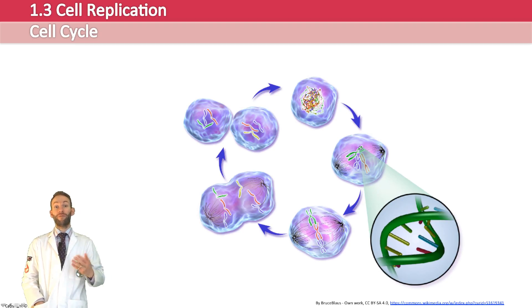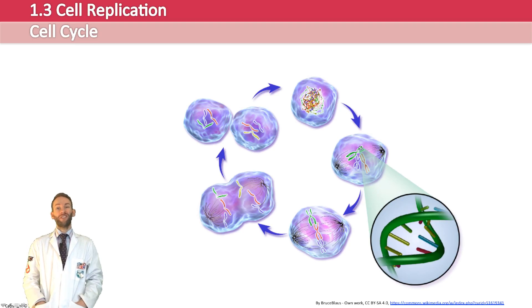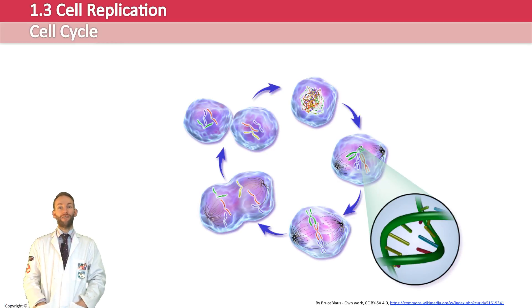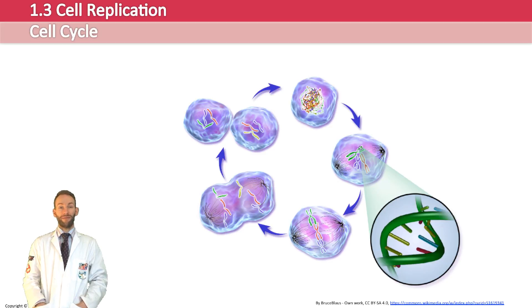When a cell divides, it goes through something called the cell cycle. The cell cycle is like the life cycle of a cell — it's a series of growth and development steps a cell undergoes to end up dividing and forming daughter cells, which then themselves will begin their own cycles. Depending on the type of cell and the organism, this can take anything from 10 hours up to maybe even years.